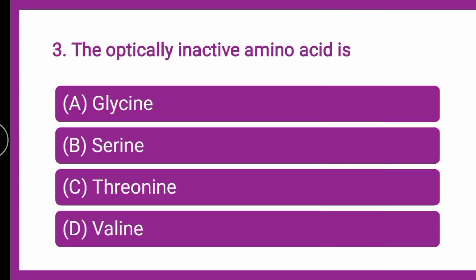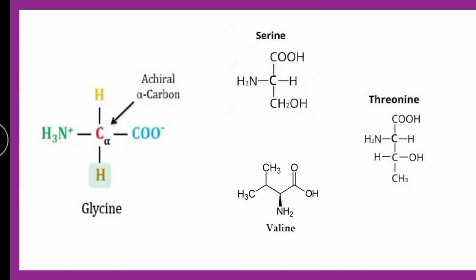Next question: the optically inactive amino acid is — whether it is glycine, serine, threonine, or valine. Put your answer in the comment section. Now, optically active means having a chiral carbon, and optically inactive means not having a chiral carbon.